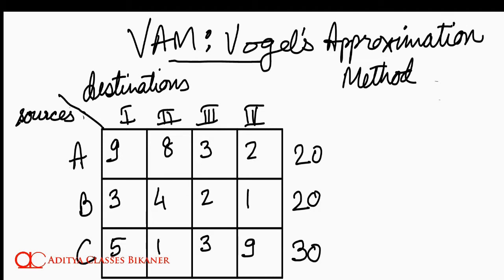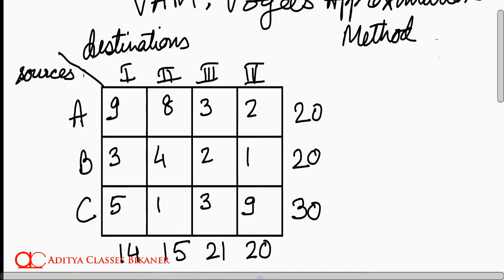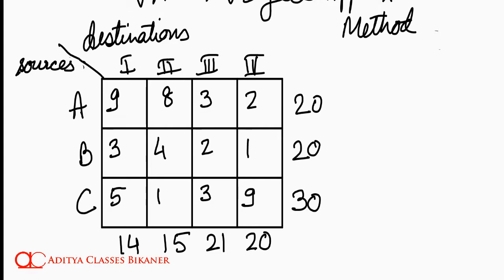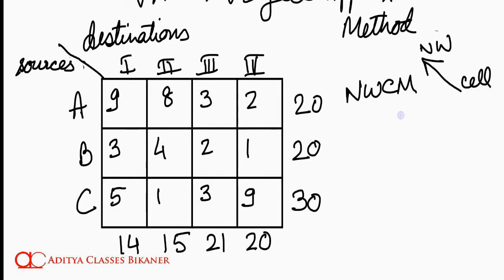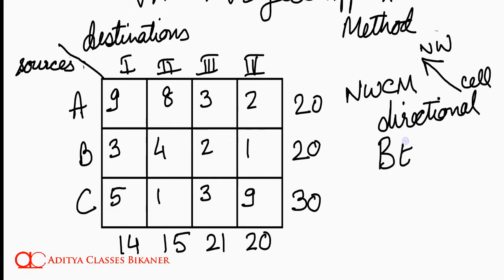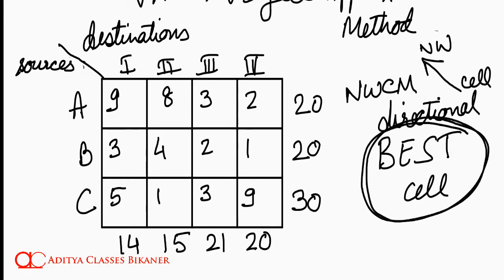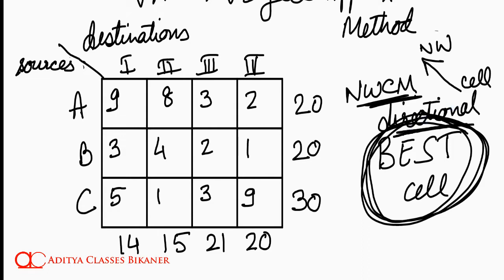This is probably the best algorithm to make assignments in a given transportation problem. If you remember NWCM, it used to say go to the northwest cell — so it was basically a directional method of finding the best cell. All of these methods tell you the best cell at the moment, the for-the-moment best cell. NWCM was using a directional approach to give you the best cell for the moment.